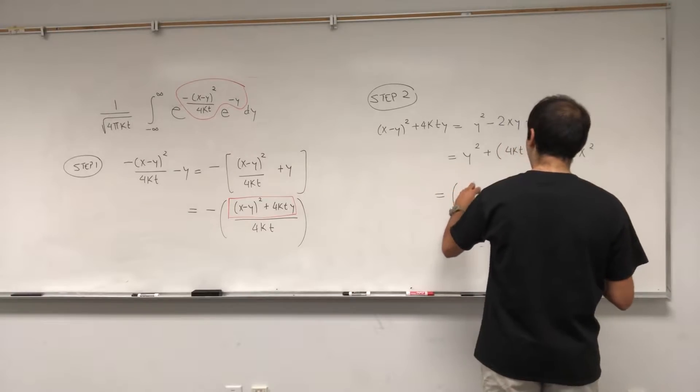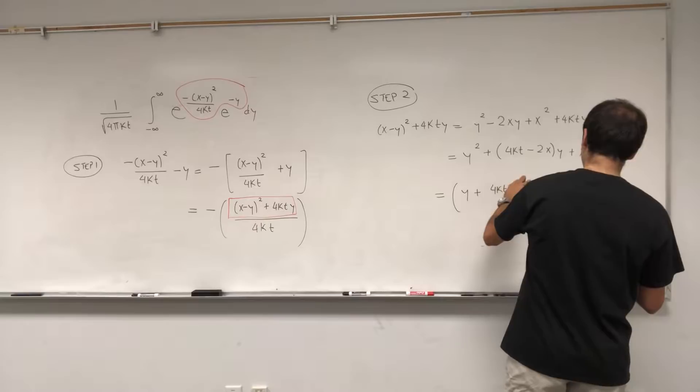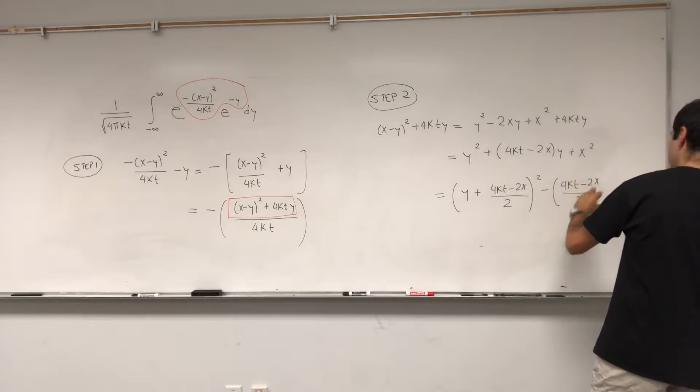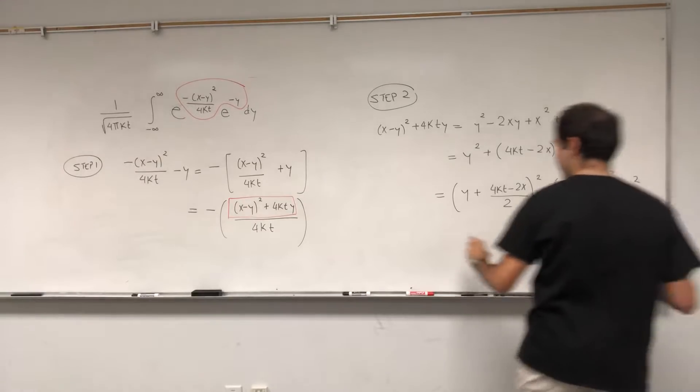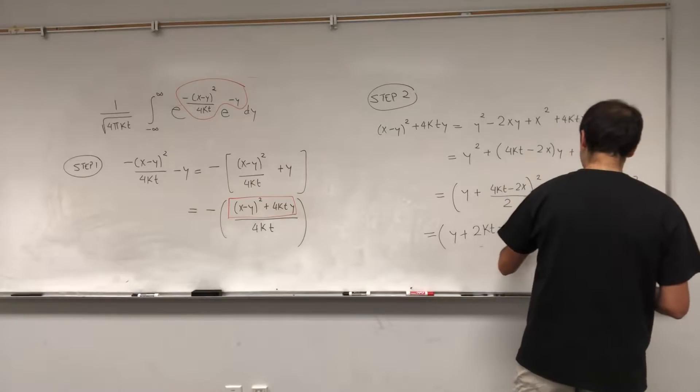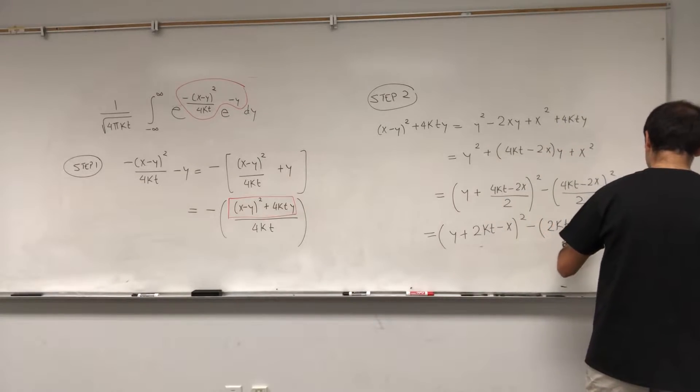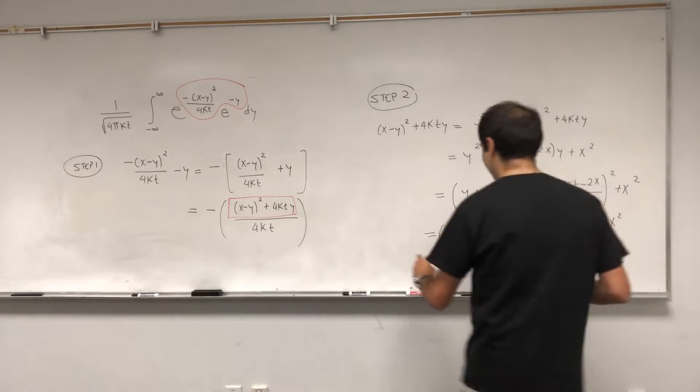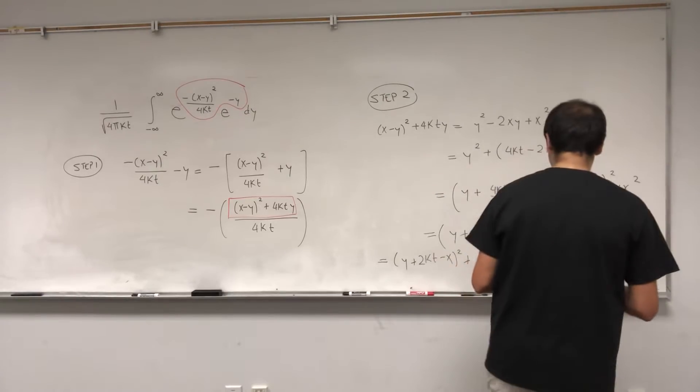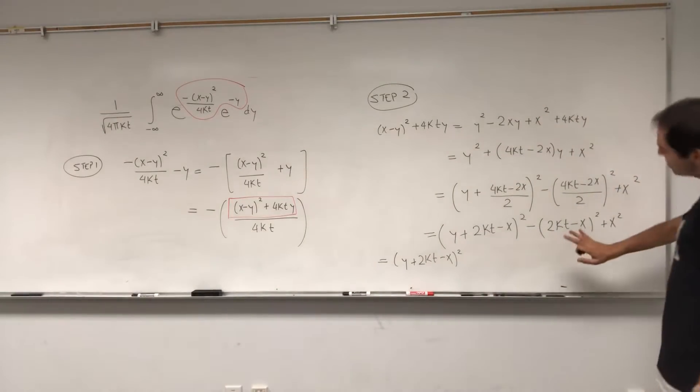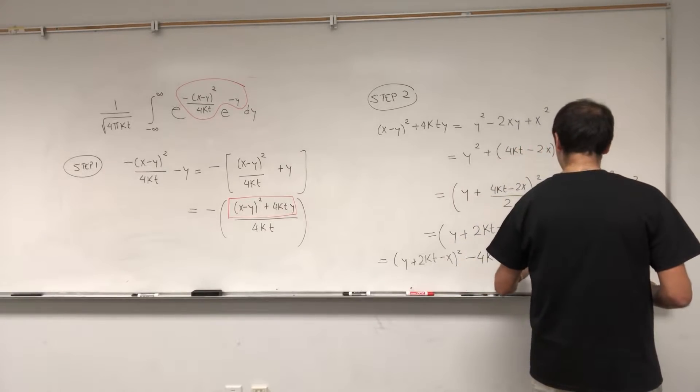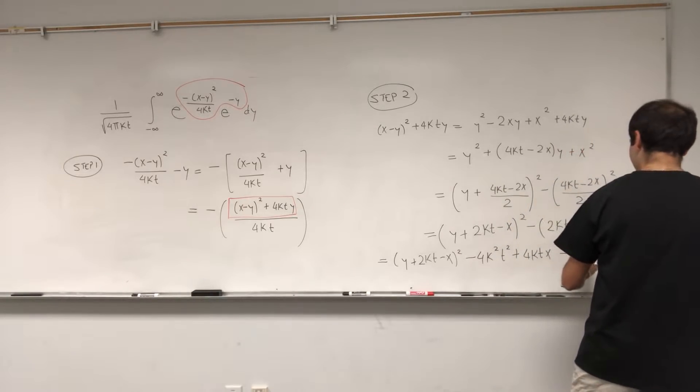And again, very important, you want to complete the square with respect to y, so think x is constant. So what this becomes, it becomes y plus 4kt minus 2x over 2 squared minus 4kt minus 2x over 2 squared plus x squared. And luckily, this simplifies a lot. So y plus 2kt minus x squared. And then, let's expand this out, so minus 4k squared t squared plus 4kt x, and then minus x squared plus x squared.